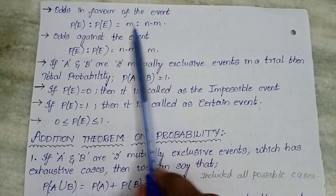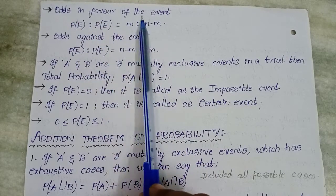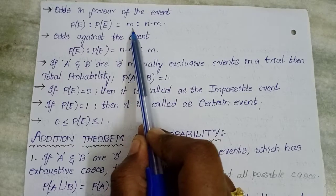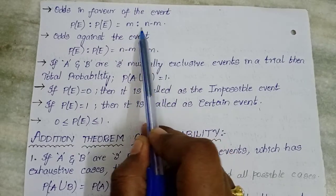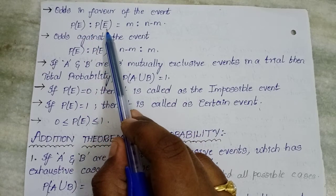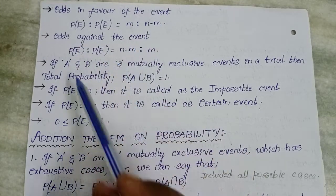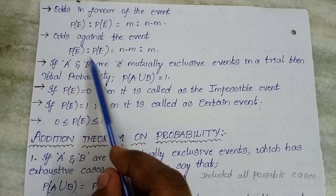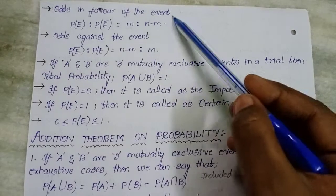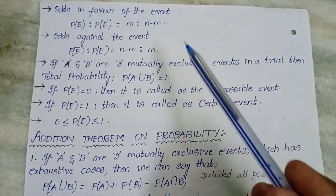Odds in favor of the event: P(E) is to P(Ē). If you see odds in favor of the event in a question paper, use this formula. Probability of favorable outcomes is to N minus M, that is M : (N − M). Odds against the event means probability of not happening of that event is to probability of that event, that is (N − M) : M. These two formulae are very, very important — please pay attention and don't neglect this formula.